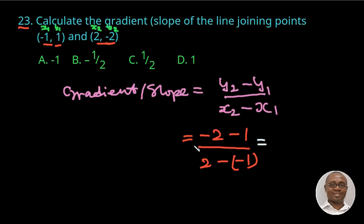Now let us simplify further. Minus 2 minus 1 is minus 3, over minus times minus gives plus, so we have 2 plus 1 that gives us 3. So 3 divided by 3 equals 1, so we finally have the slope as minus 1. The answer, option A, is the right answer. Thank you.